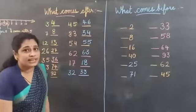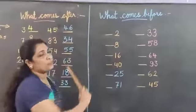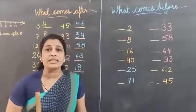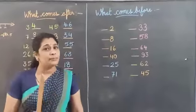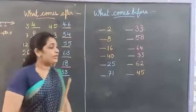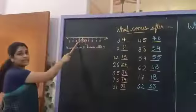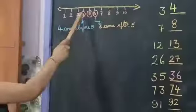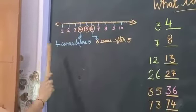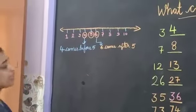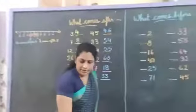Now we will learn what comes before. Before means 'pehle' — the number that comes first. For example, 5 ke pehle kya hota hai? 4. So 4 comes before 5.